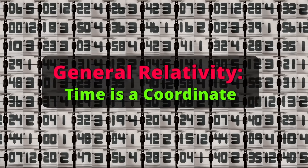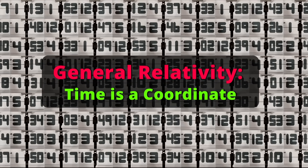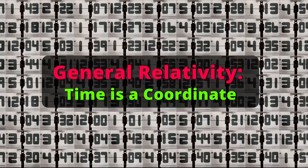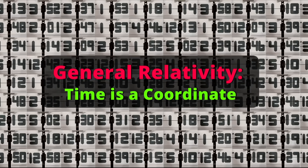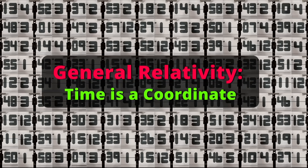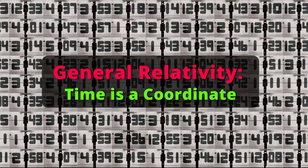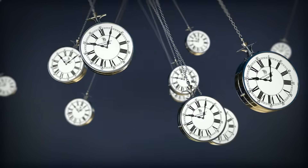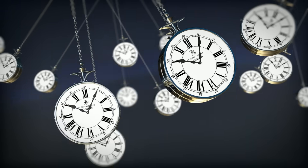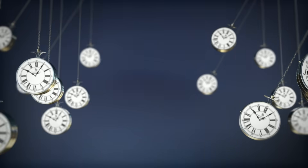In general relativity, time is a coordinate, and there are many different ways to choose it. There isn't just one time — there are infinitely many, just like there are infinitely many ways to put a coordinate grid on New York. That sounds confusing enough, but it gets worse if you add quantum physics to the picture.